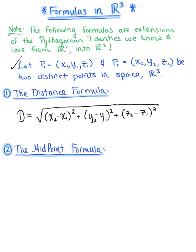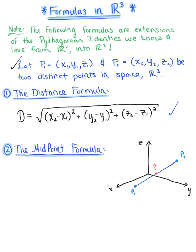Now, what about finding the midpoint of this line segment? To help us visualize, think about the first octant with the x-axis, y-axis, and z-axis. The distance between P₁ and P₂ is the length of the line segment connecting those two points, which we found above. For the midpoint, it's the same formula we know from two dimensions, but we need to incorporate the z component.